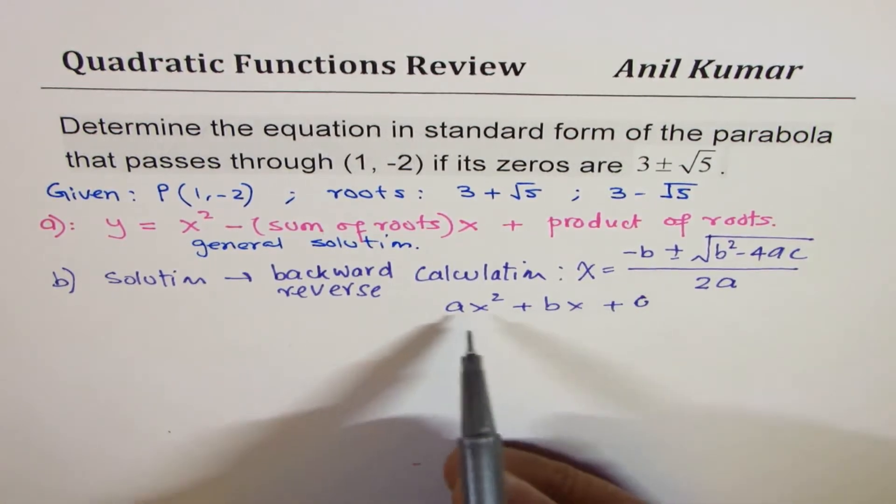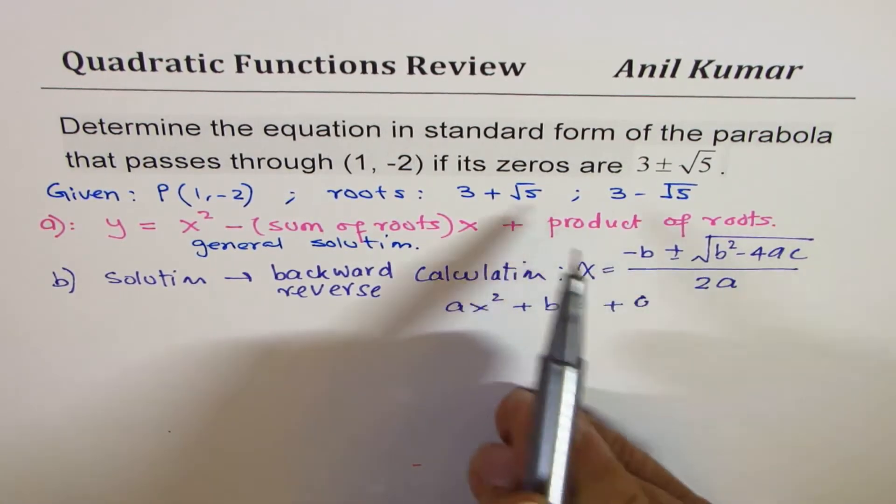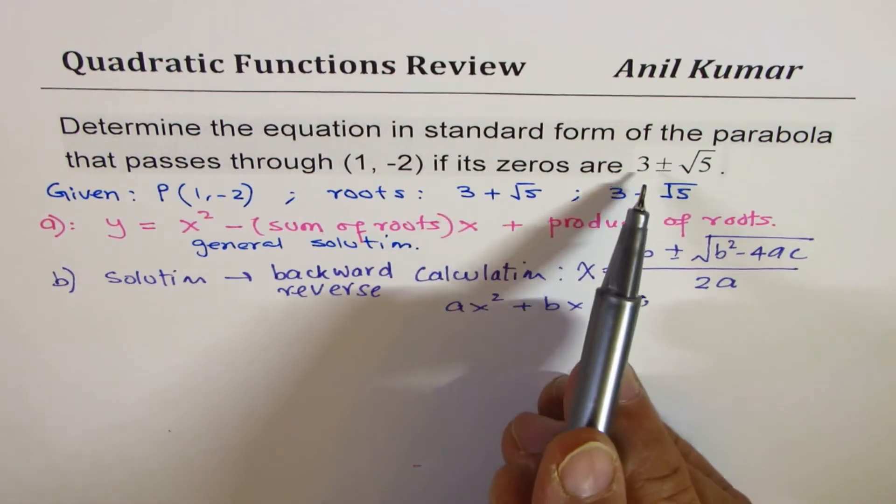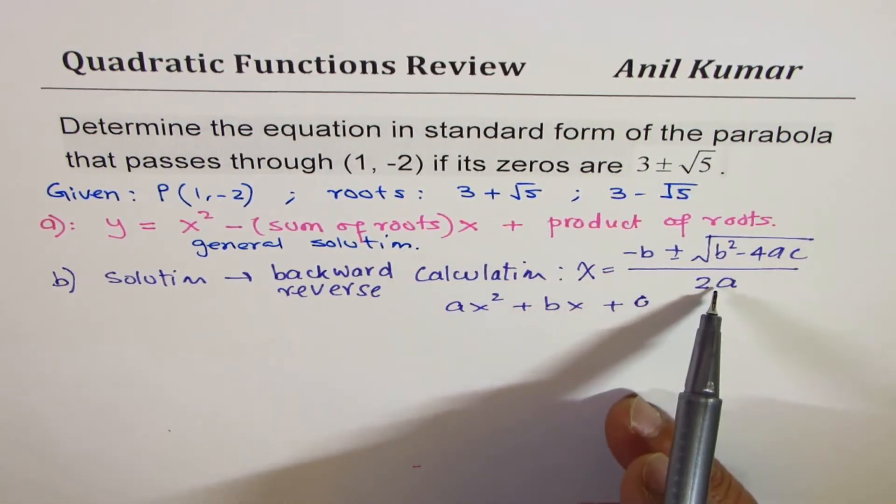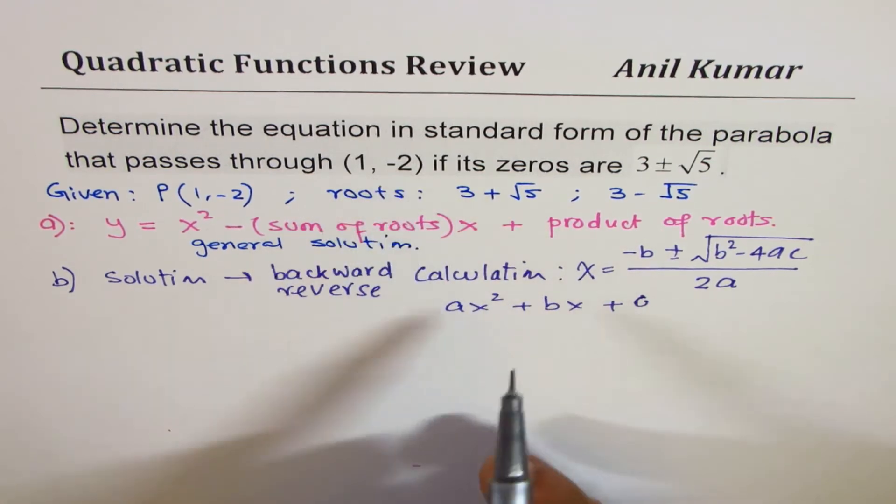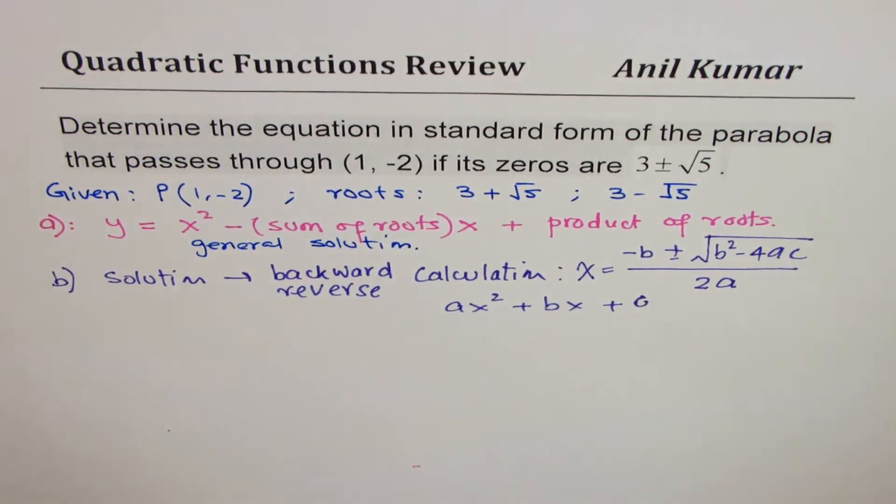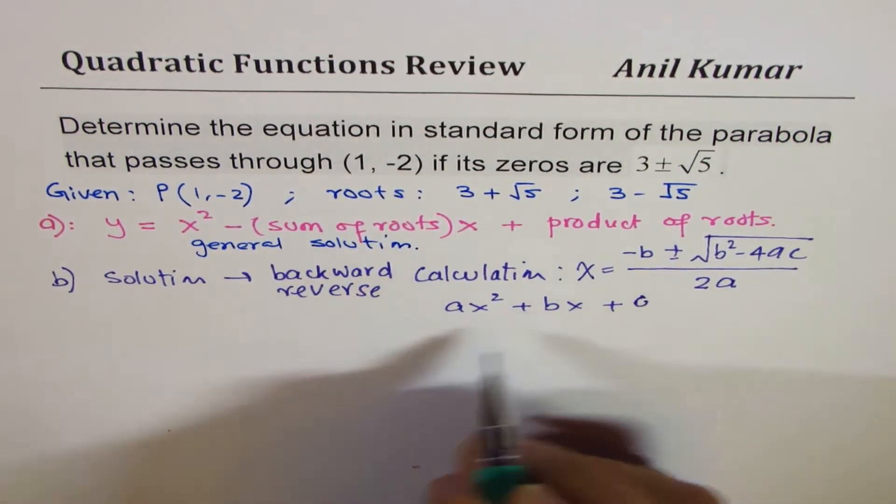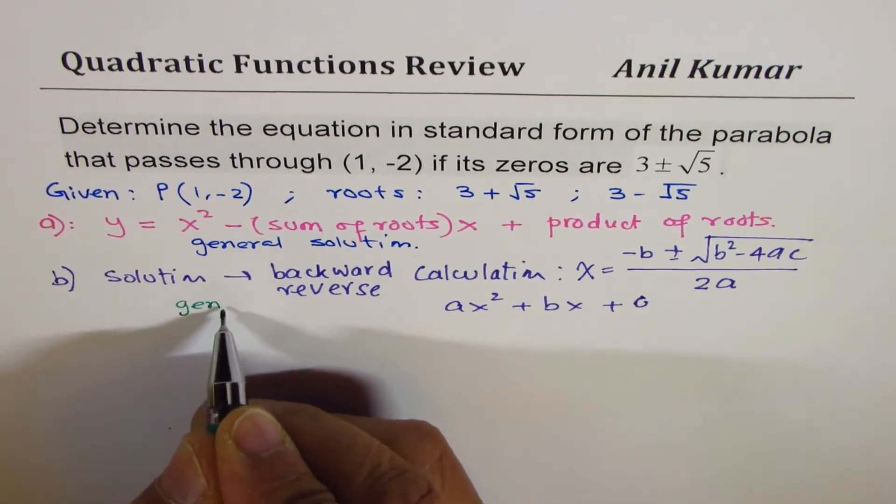And standard form is ax² + bx + c. So you can find a, b, c from these roots which are 3 ± √5. But again, if you are given a point, it also gives you a general solution.